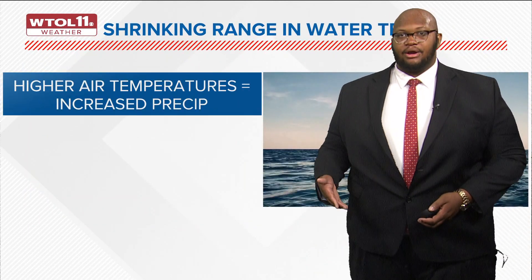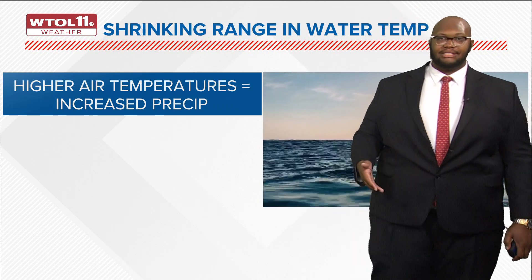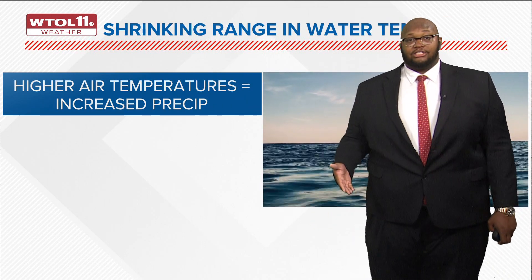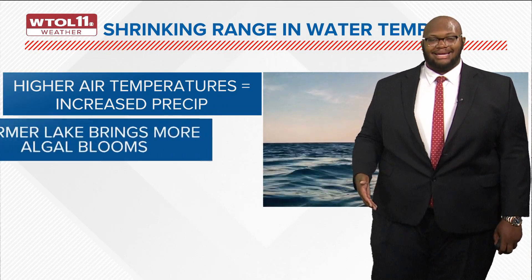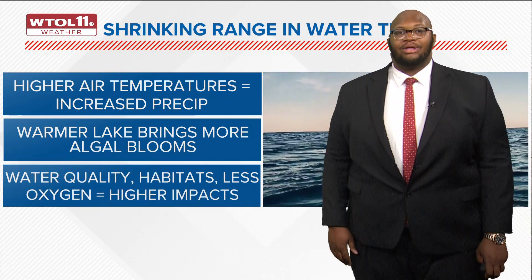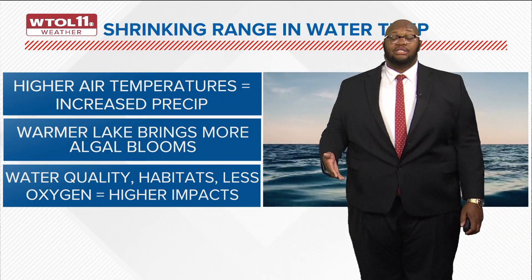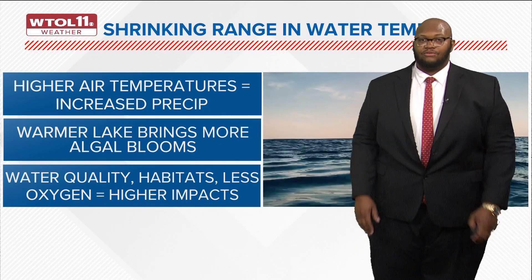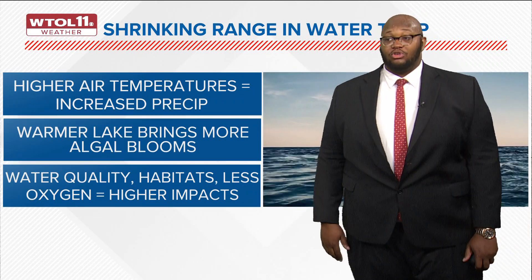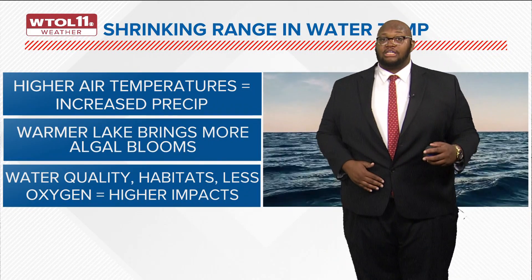As we go throughout each year, this can really start to impact water temperatures in our area. Due to high and warming air temperatures, that shrinking range in water temperature could change, and there could be some significant impacts. Higher air temperatures mean increased precipitation, which is not necessarily a good thing for the lake. This brings more algal blooms to our area and typically changes the ecosystem of Lake Erie — affecting water quality, habitats, and oxygen levels, which would be really bad for mayflies and the fish they feed on throughout the summer months.